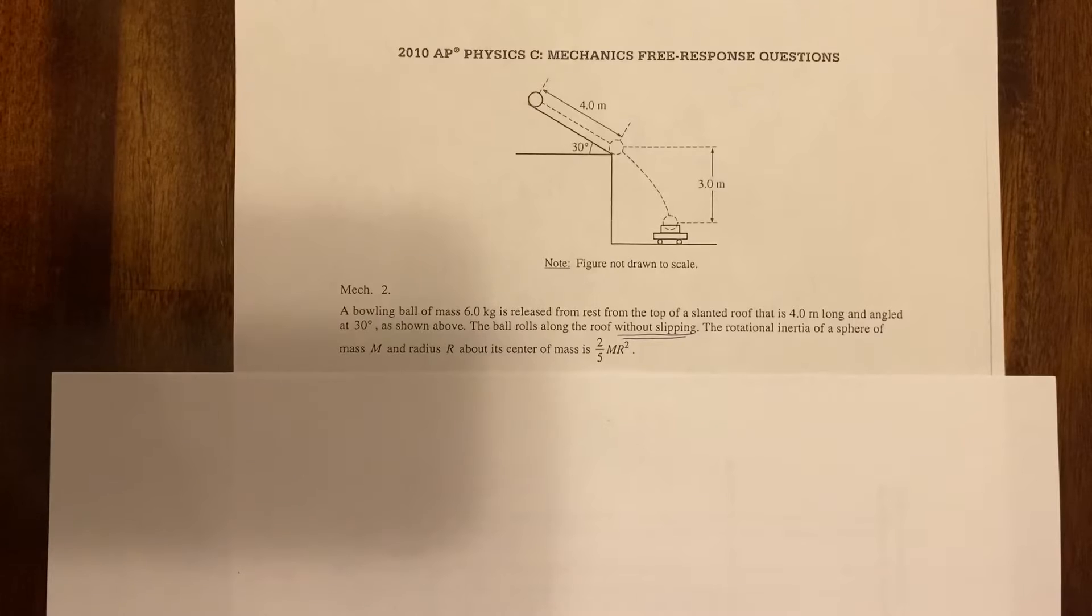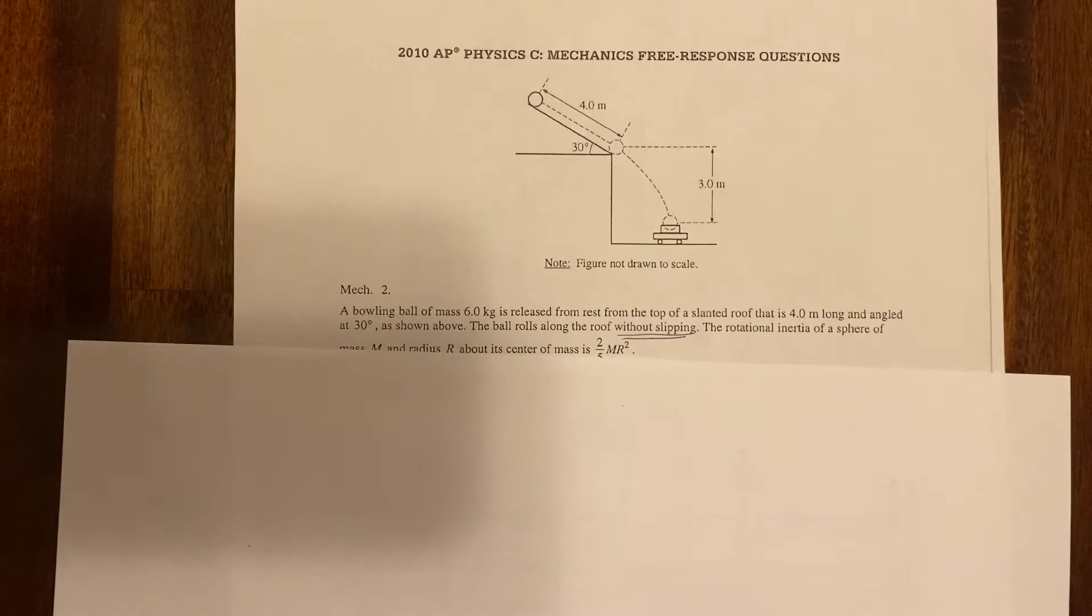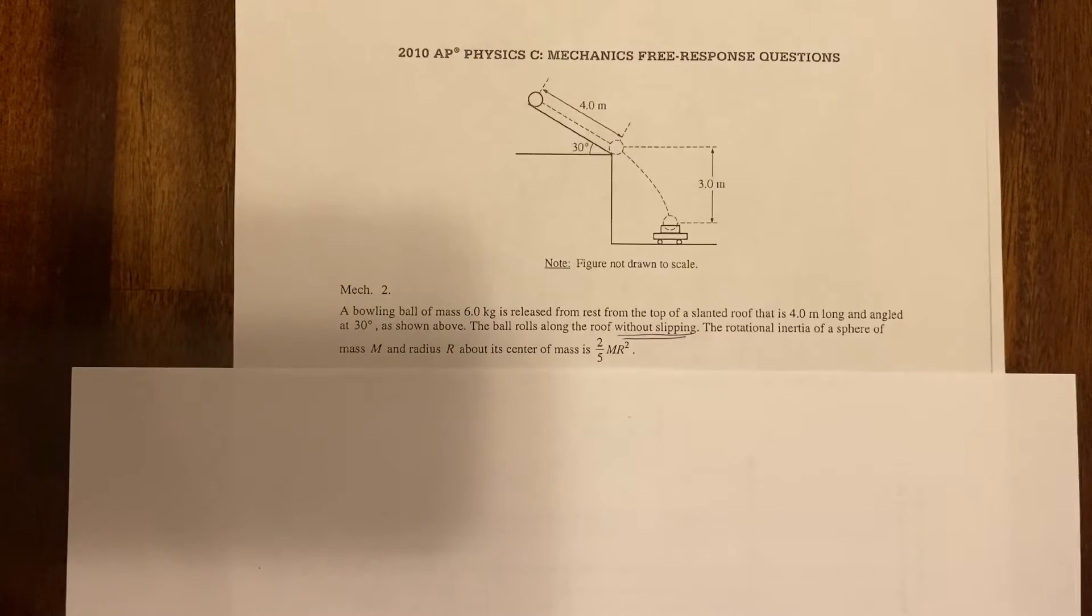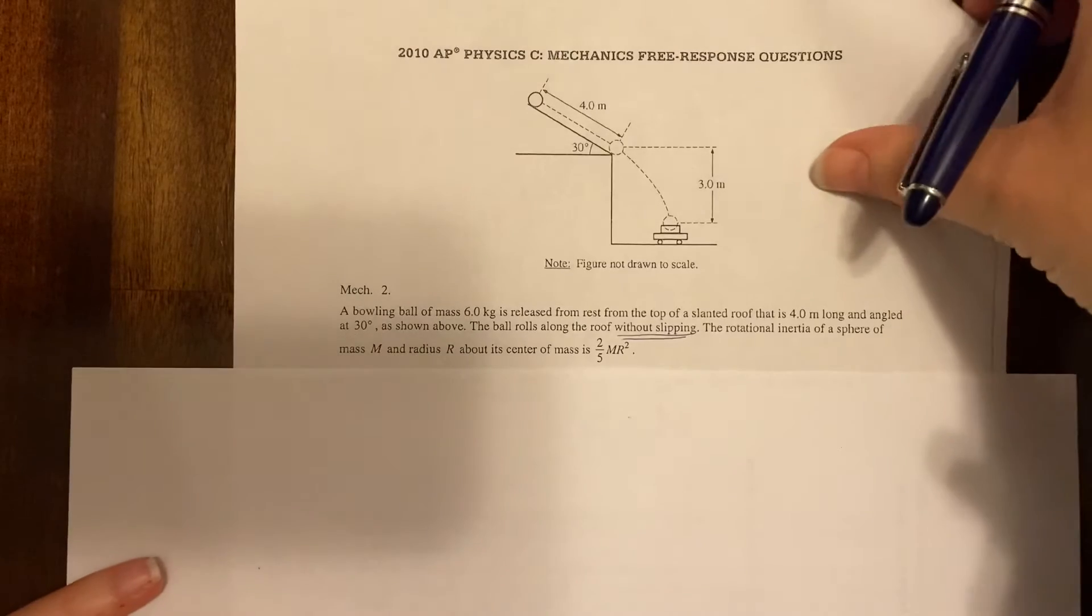So what this says is we've got a bowling ball of mass 6 kg released from rest from the top of a slanted roof that is 4 meters long and angled at 30 degrees as shown above. The ball rolls along the roof without slipping. Now without slipping, that's your cue that we're going to be rolling. The rotational inertia of the sphere of mass m and radius r about its center of mass is two-fifths mr squared.